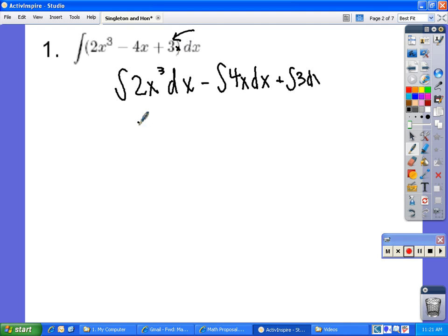The second step is to remove the coefficients. So we have 2 integral x cubed dx minus 4 integral of x dx plus the integral of 3dx.